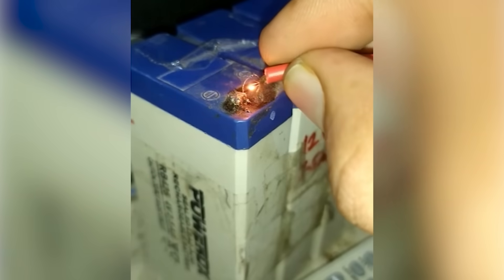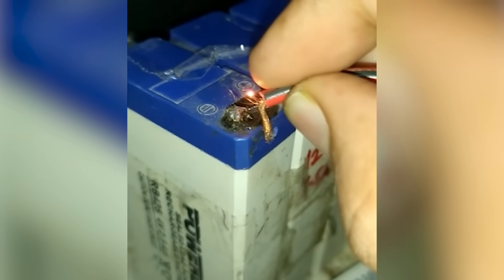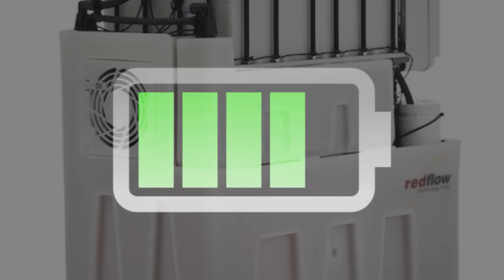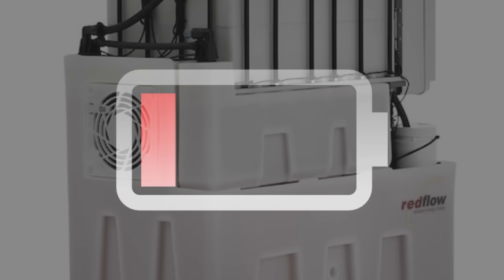And there's something else. Flow batteries don't catch fire. Their electrolytes are water-based, non-flammable, and stable. And they can discharge down to zero without degrading.